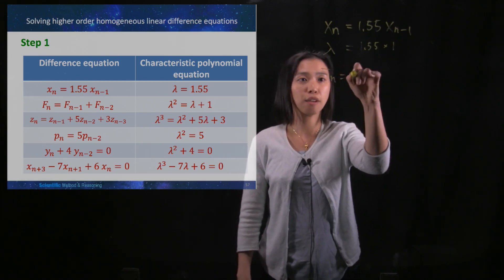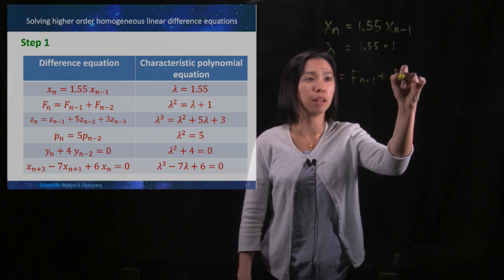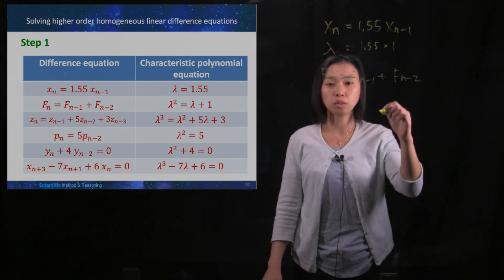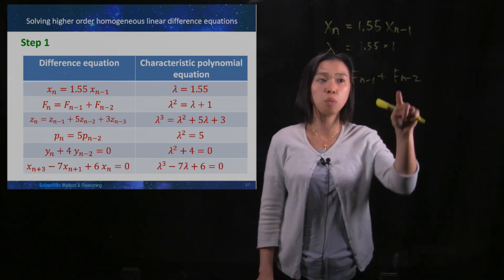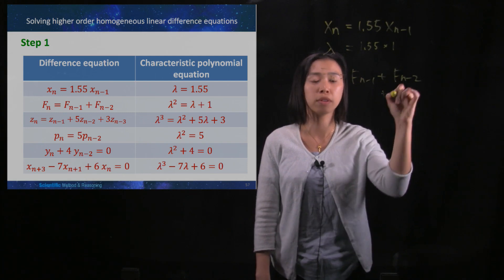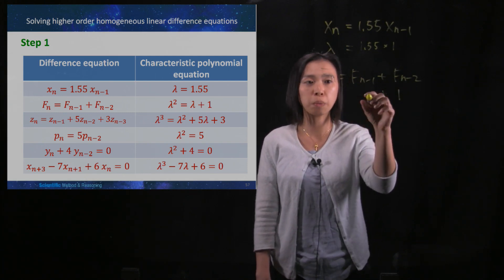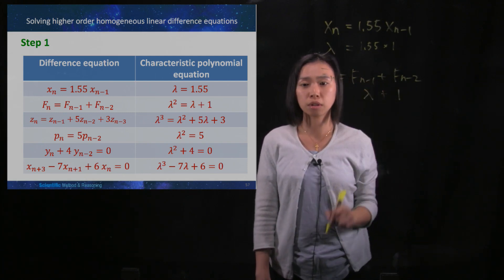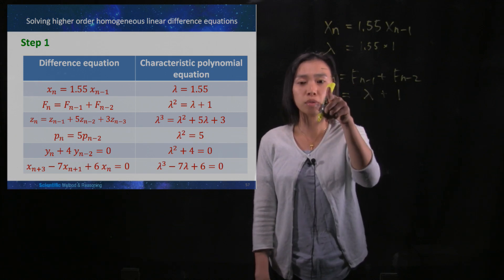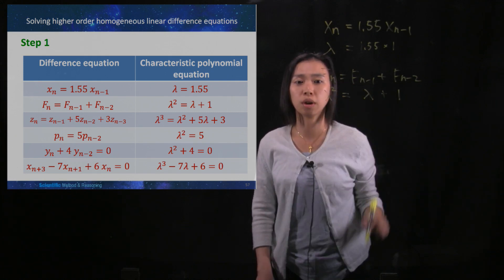The second example: fn = fn-1 + fn-2. The smallest term, fn-2, is changed to 1. The next term, fn-1, becomes lambda. And the largest term, fn, becomes lambda squared, giving the characteristic polynomial lambda squared = lambda + 1.